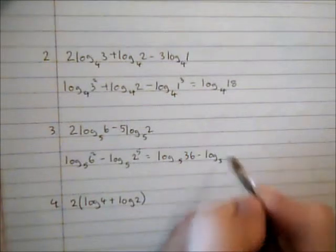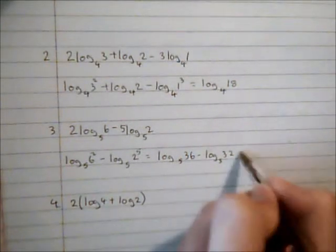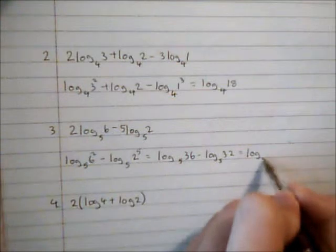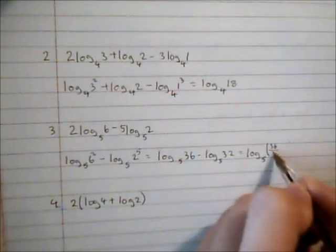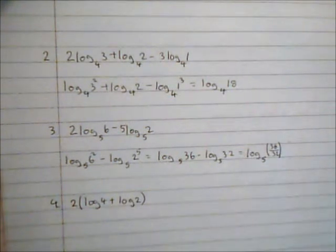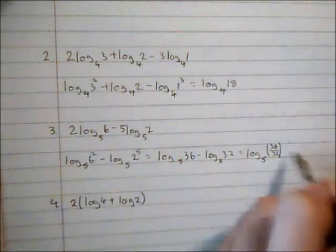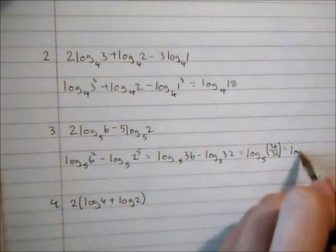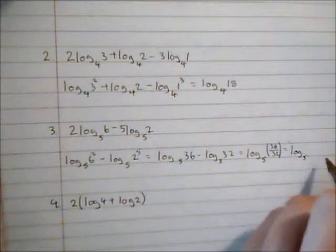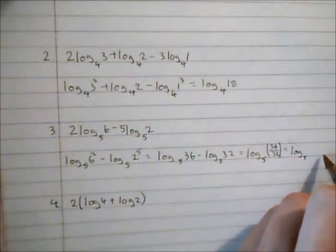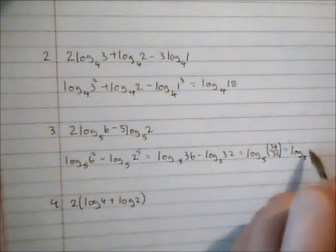So that's log₅(36/32), and then that will cancel down again. 36 over 32 can be simplified to 9 over 8.